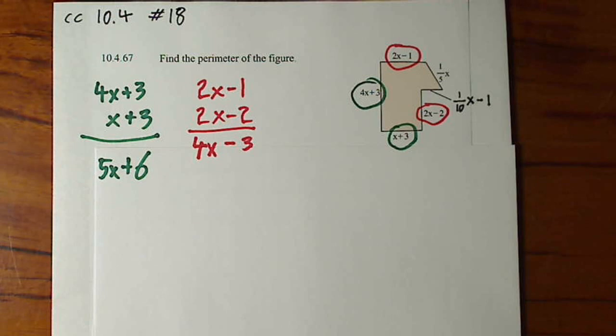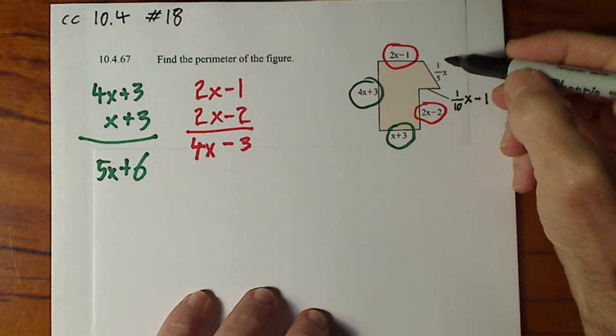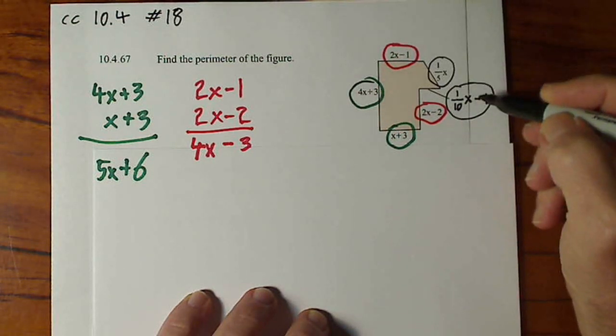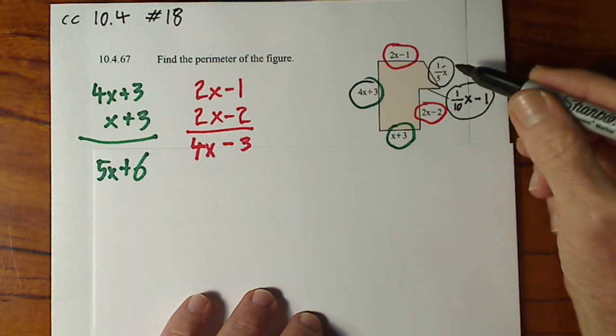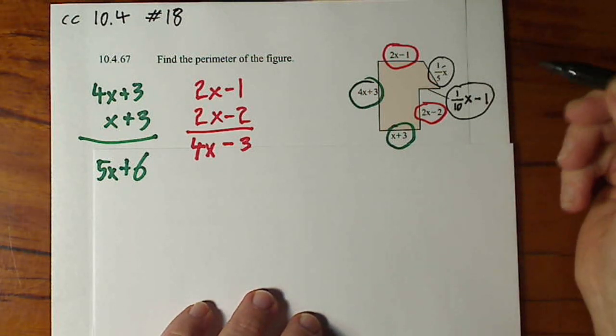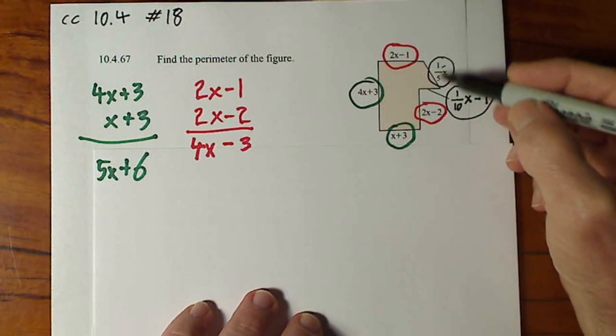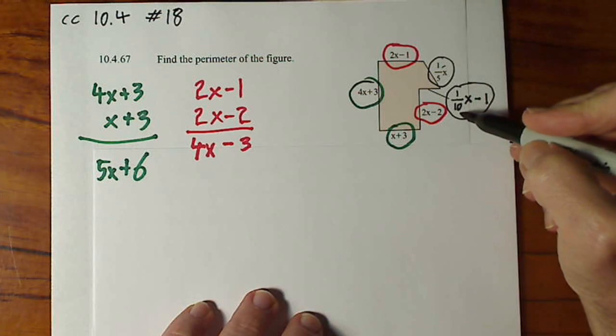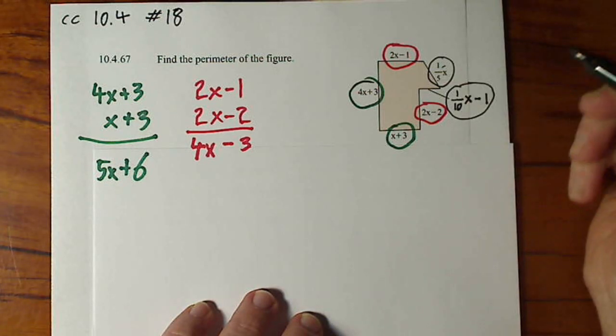And now we'll deal with the terms that involve fractions. We definitely need common denominators in order to add those two fractions. So I'm just going to focus on the coefficient, the number in front of the variable.